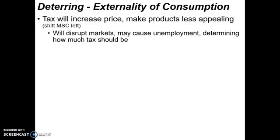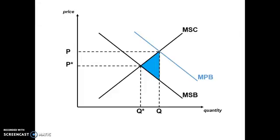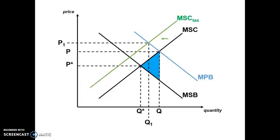That's the challenge with a tax, but that's also the whole point — to deter a product that has a negative side effect. On the diagram, we add a tax line to the marginal social cost curve, which acts as a supply curve. We only add taxes and subsidies to the supply side. Notice that the price rises to P1, and more importantly, the quantity decreases from Q to Q1, moving closer to Q*. So society gets closer to the ideal, and the welfare loss wedge shrinks from the blue wedge to the smaller green wedge.